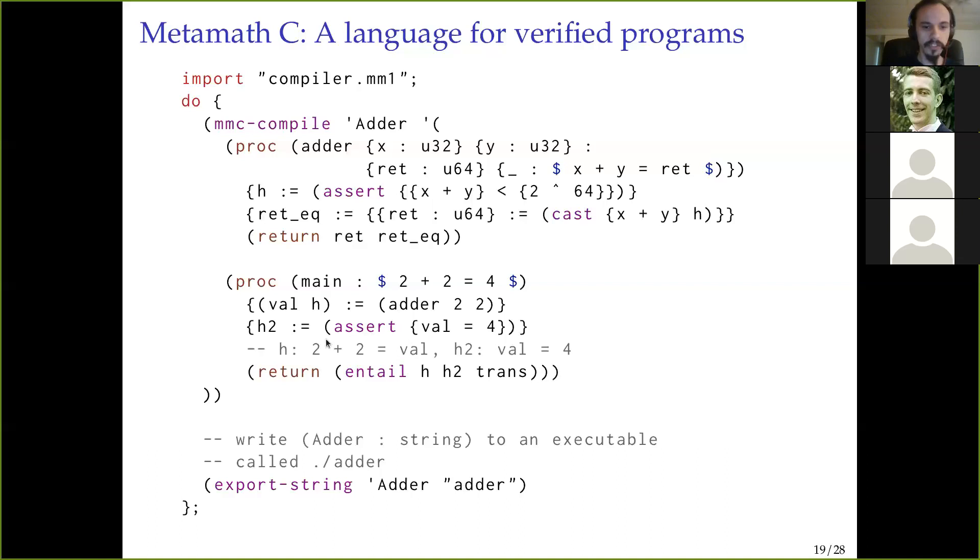So this is actually going to end up being a proof that x plus y equals ret. And so we just pass them both out. And then main calls adder with 2 and 2. It gets a proof that, it gets a value, val, and a proof that 2 plus 2 equals val. It asserts that val equals 4, and now h2 is a proof that val equals 4, and we compose them with transitivity. And we return that, which means that we've returned a proof of 2 plus 2 equals 4.